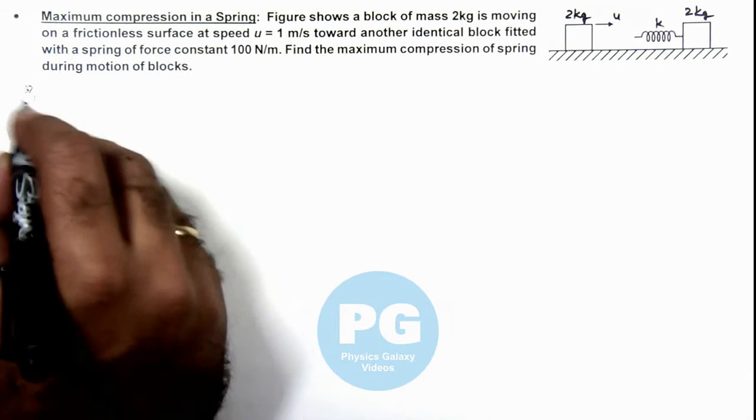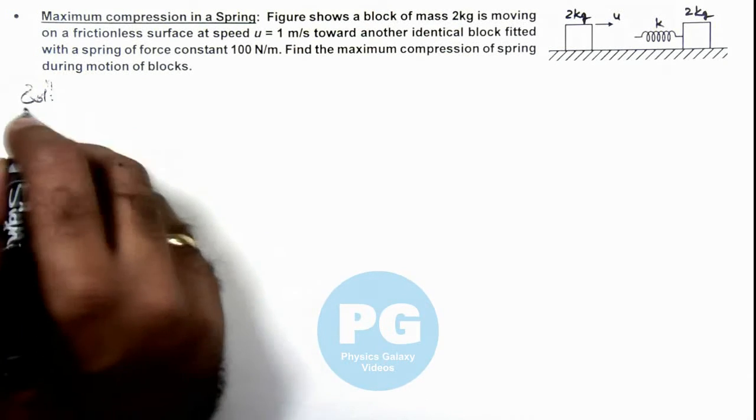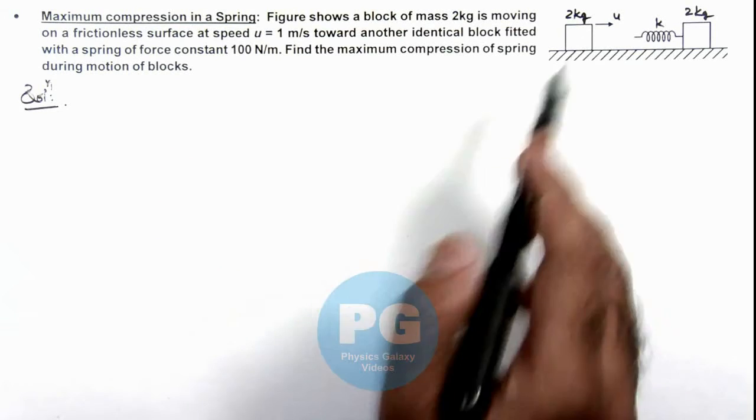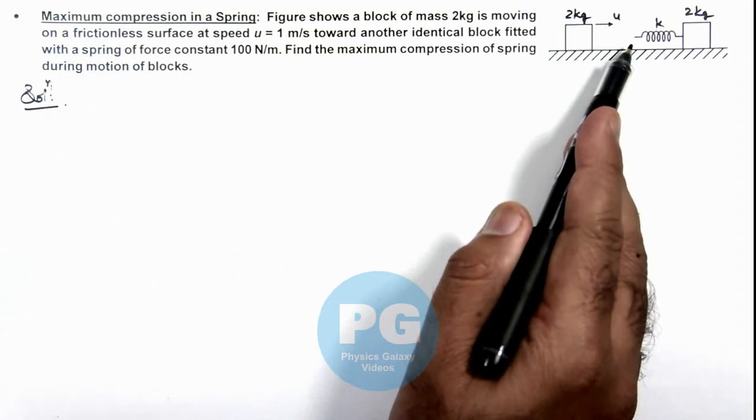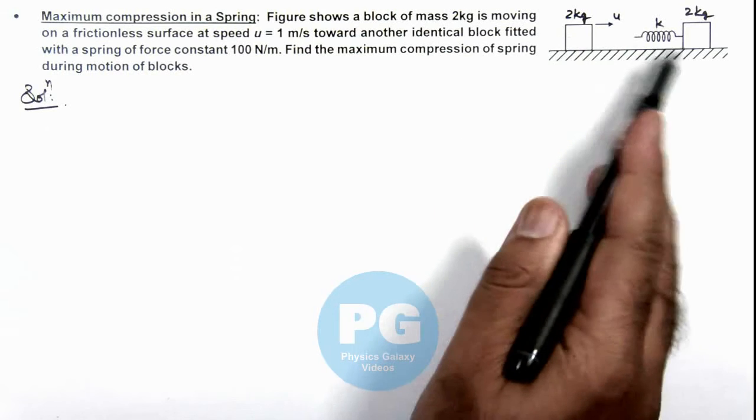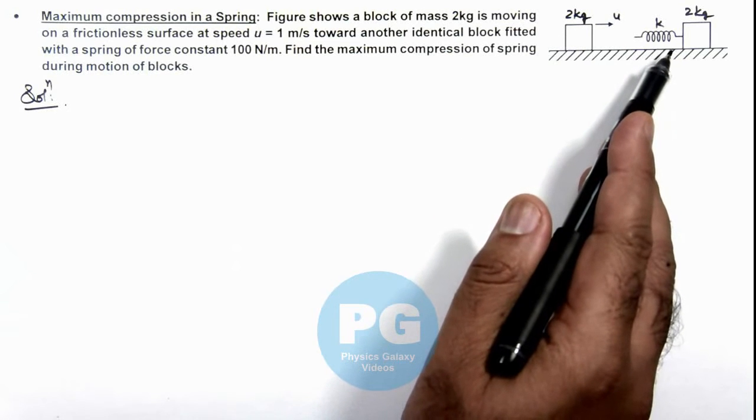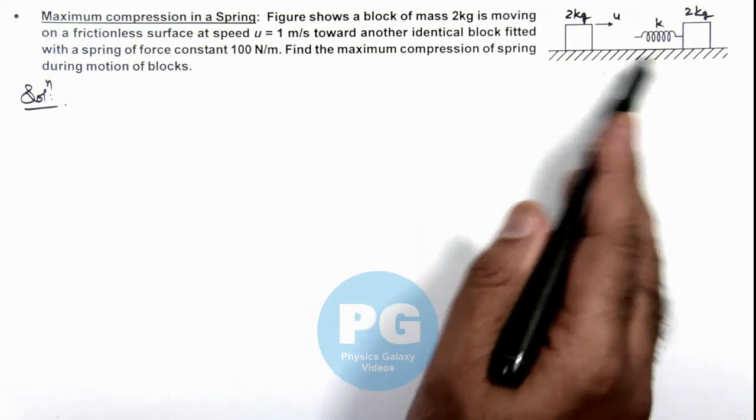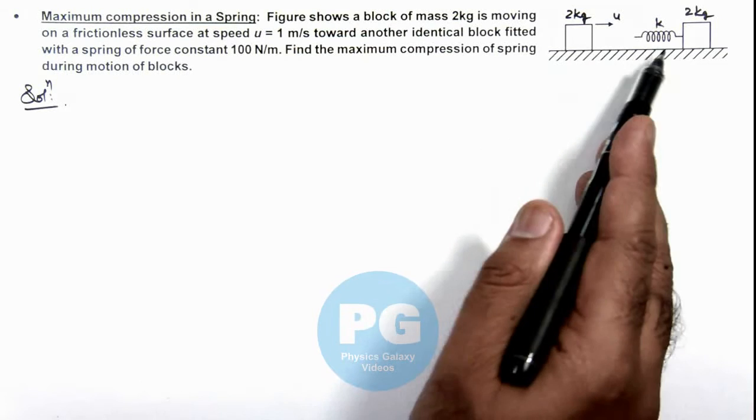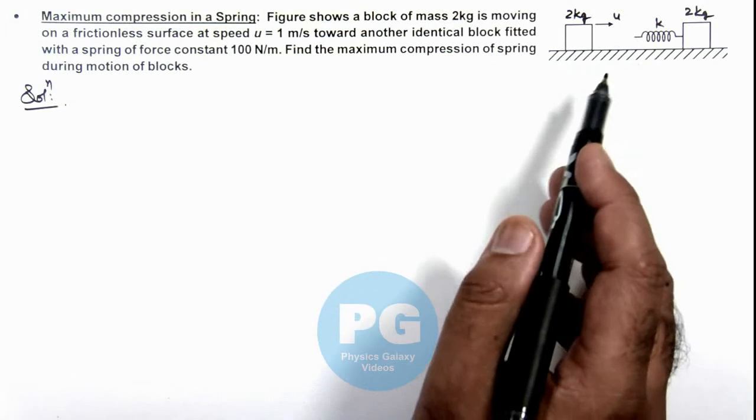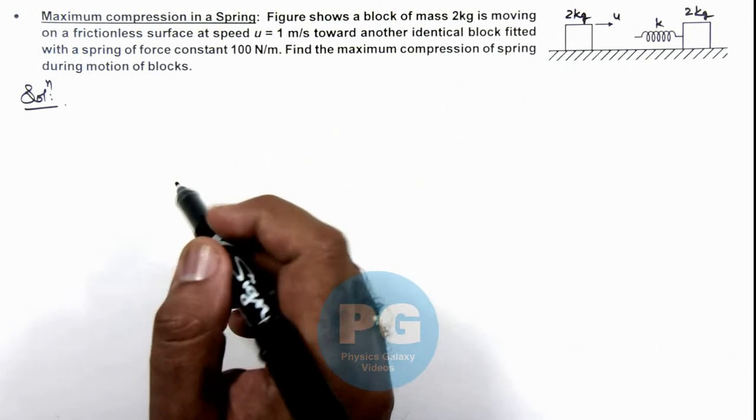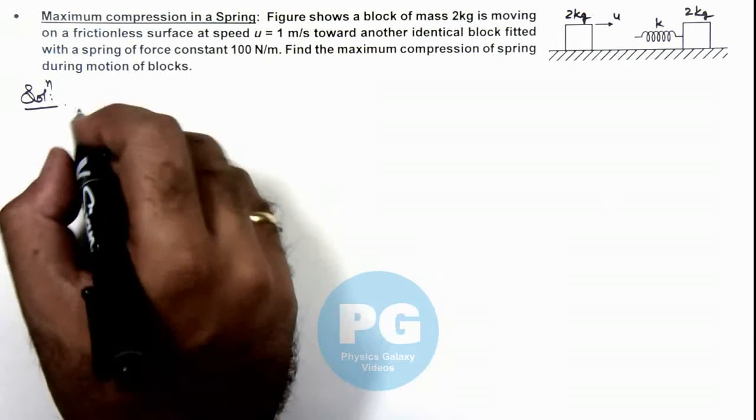Here in the solution we can say when the block hits the spring it'll start transferring momentum from first block to the second. At the time of maximum compression in spring both blocks would be moving at equal speeds. This we already discussed in concept videos.